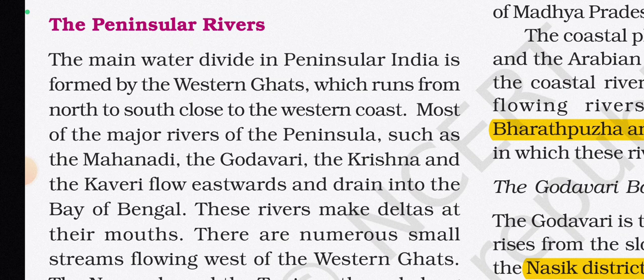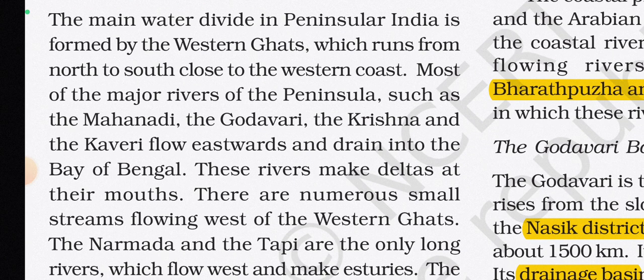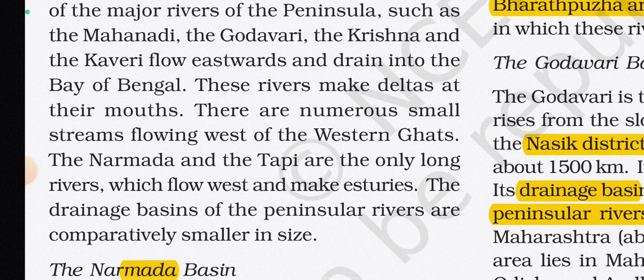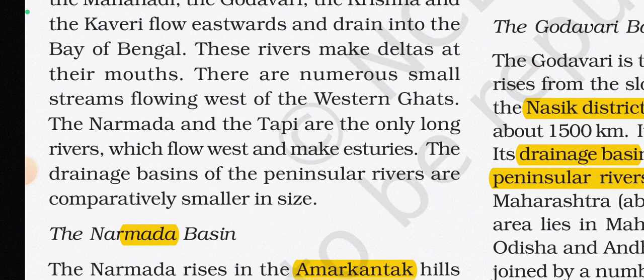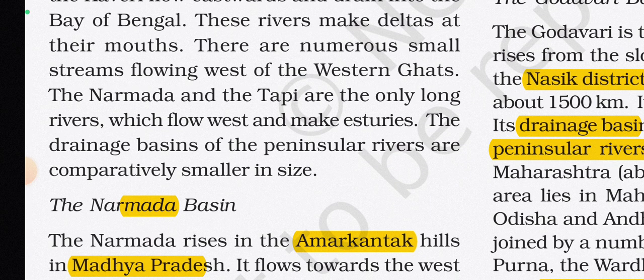The main water divide in Peninsular India is formed by the Western Ghats, running north to south close to the western coast. Major rivers such as the Mahanadi, Godavari, Krishna, and Kaveri flow eastwards and drain into the Bay of Bengal, forming deltas at their mouths. The Narmada and the Tapi are the only long rivers flowing westward, making estuaries. The drainage basins of the Peninsular rivers are comparatively smaller in size.